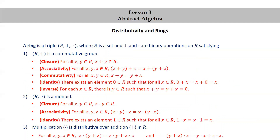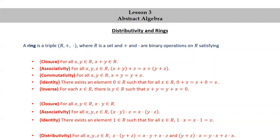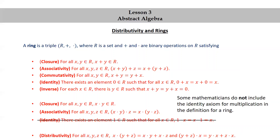Here we see all of the properties at once — the three meta-properties broken down into individual properties. Together, these form the ring axioms: all the statements given to be true inside a ring. There are additional properties that can be proved from the axioms. Some mathematicians do not include the multiplicative identity axiom in the definition of a ring, but we always will.